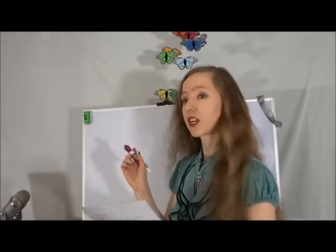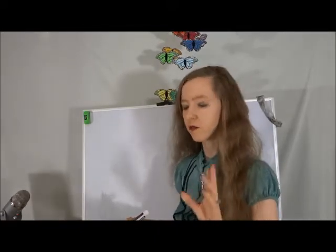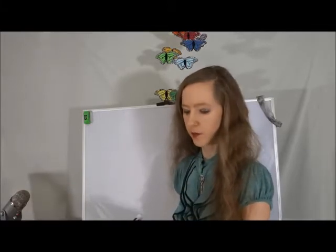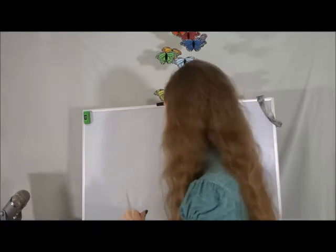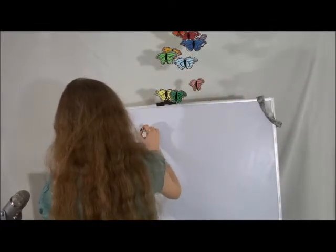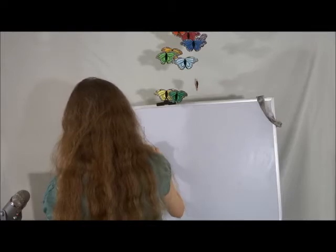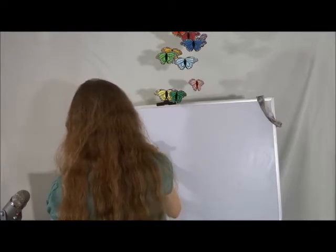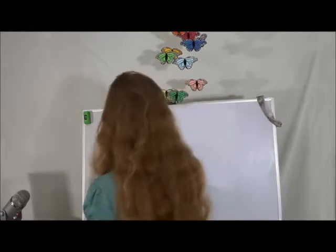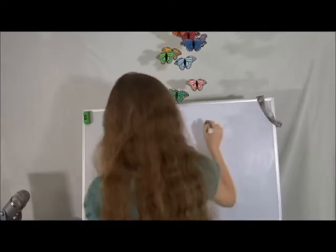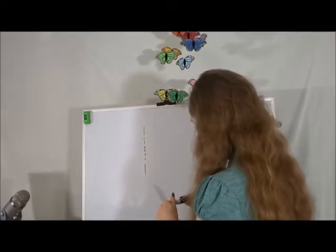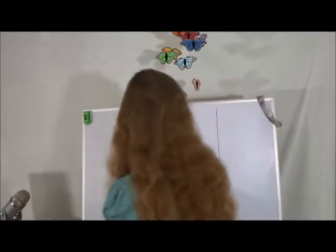We're going to cover three recitation sections in one day. The diffraction grating is a lot like double-slit interference — in fact, double-slit interference is a special case of that. Basically, all the diffraction grating is is like double-slit interference, but now instead of having two slits, we have lots of slits. So if I were to draw a picture, we have some slits, dots representing however many slits we have in the middle, and then more slits, with a screen off to the side.